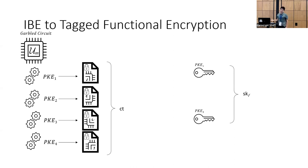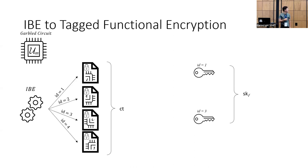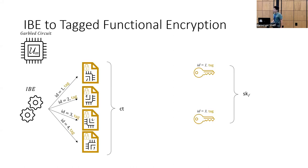Since our starting point is IBE, we can simply replace all these different public key schemes with a single IBE scheme, and instead of encrypting to different public keys, we encrypt to different identities. Once we have this, it's easy to go to tagged functional encryption — we just add our tag to the ID space. The efficiency and security properties we wanted from tagged FE follow from the corresponding efficiency and security in an IBE scheme.